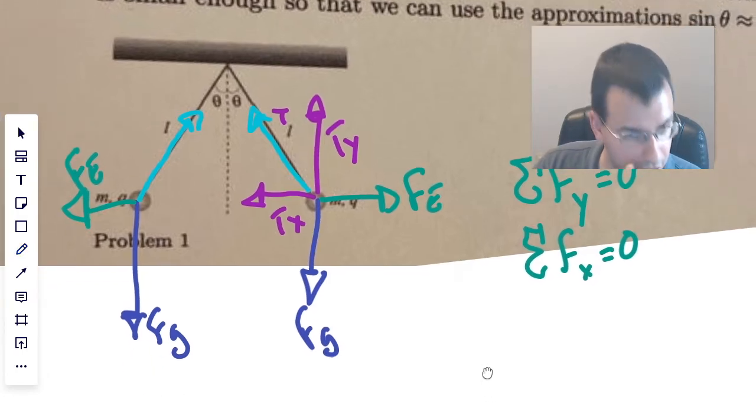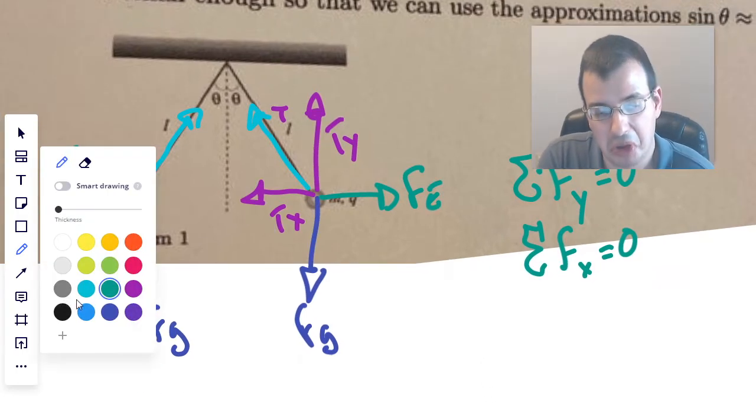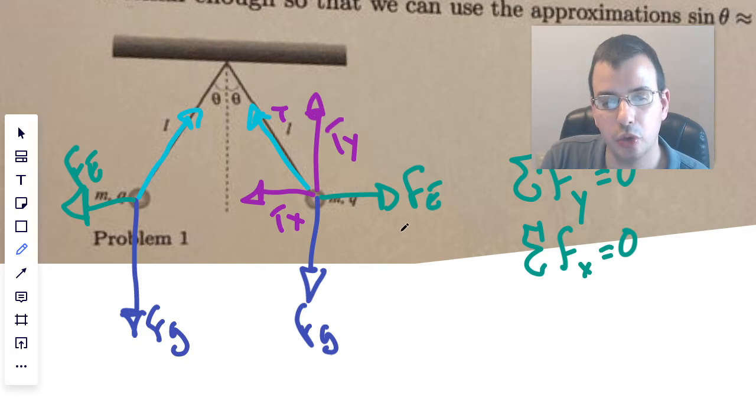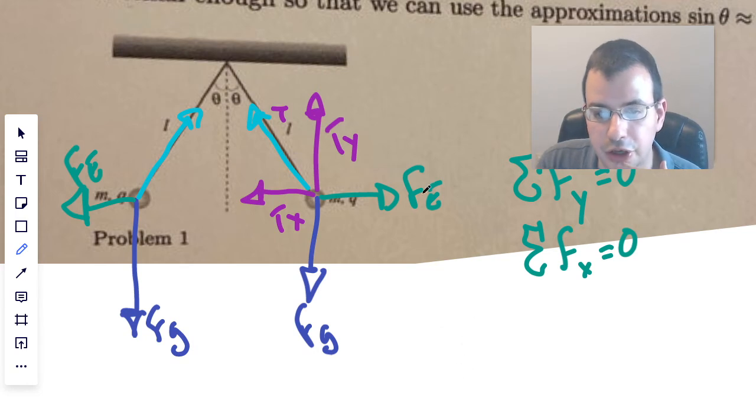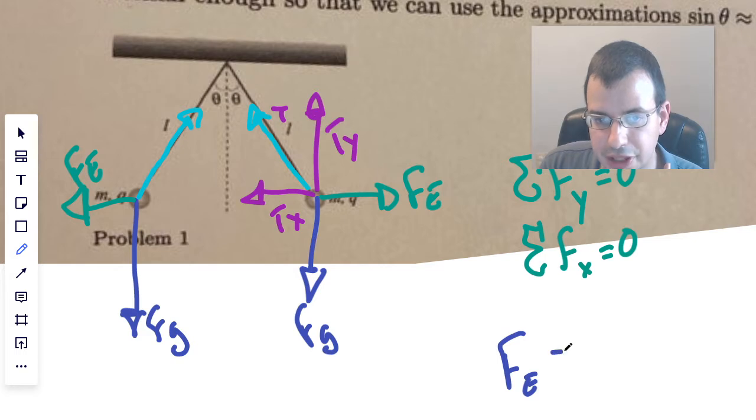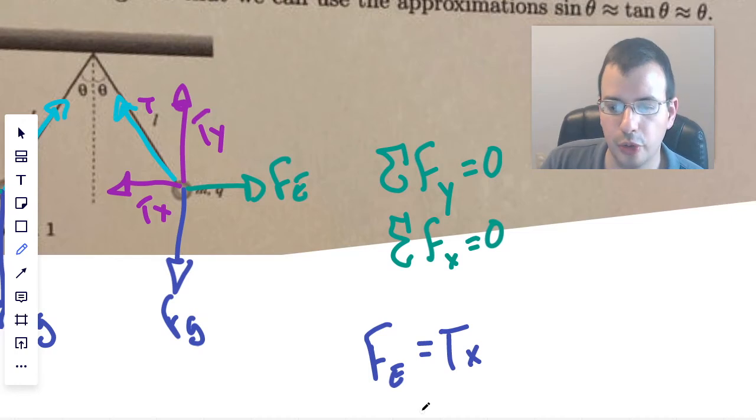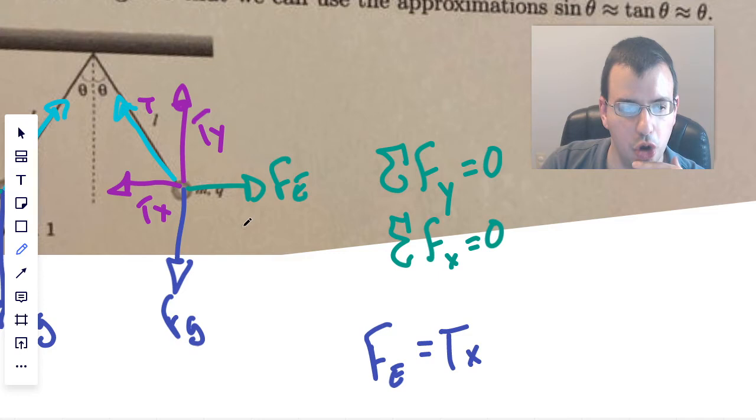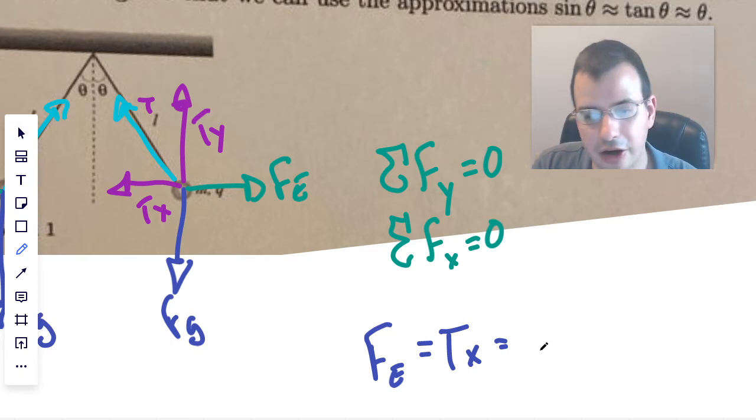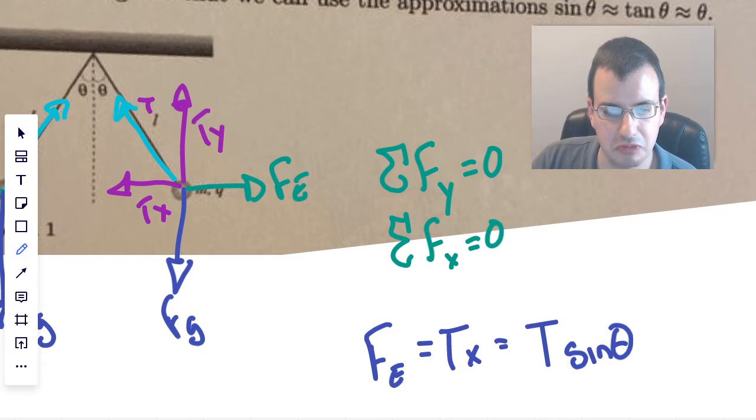So I could say something like, sum of all forces in the Y direction equals 0, and then we could also say the same thing for X. So from there, I'll probably start with the X direction. I think I'll look at this guy just to start with. So we're going to say that force electric equals tension X, and since they're in opposite directions, one would be negative. So when you add them up together, you get 0. And looking at theta here and X there, then that would be the tension times sine of theta.